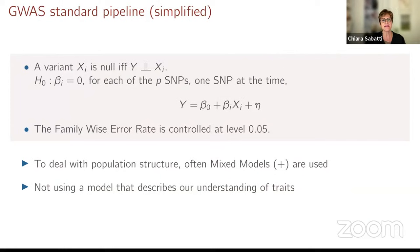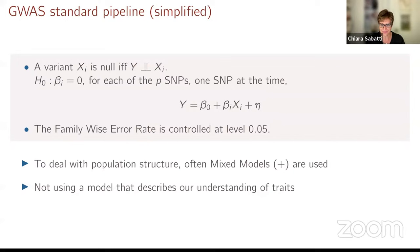The standard way in which these datasets are analyzed is fairly simple, even though the particular version I'll give you is a little cartoonish. What is typically done is that we march through the genome one variant at a time, and we declare a variant null if it is independent from the phenotype. For each SNP, single nucleotide polymorphism genotyped in the genome, we fit a univariate linear model and test the hypothesis that the coefficient of this SNP is equal to zero. Because we are doing this a large number of times, we need to control multiplicity, and we use the family-wise error rate at the level 0.05.